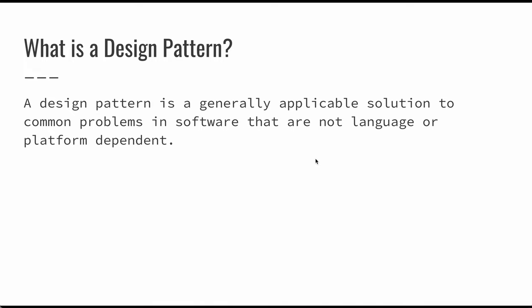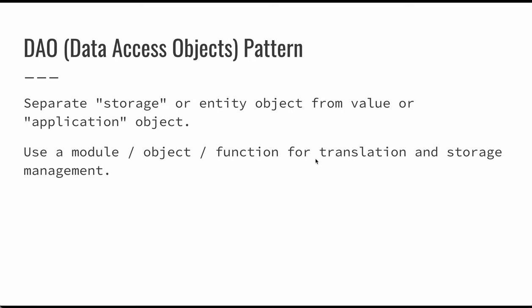We've seen design patterns work over and over again in software, so we tend to like them because we know we have some record or some experience in how they're actually going to operate. The first of these to really think about is a DAO pattern — a data access object pattern. Basically, the idea behind a DAO pattern is that we're going to separate the way we store data from the actual objects themselves. One simple way to do this is to use a module, an object, or a set of functions for translation and storage of the data.